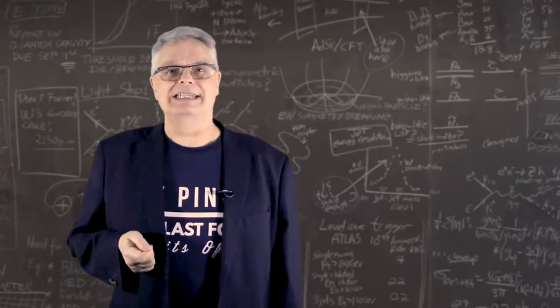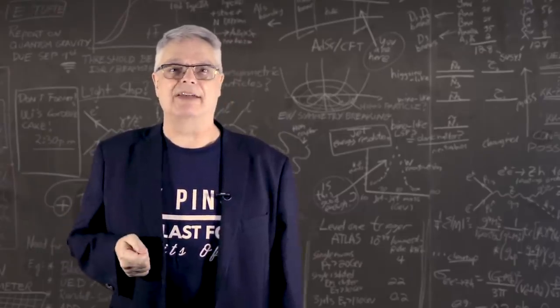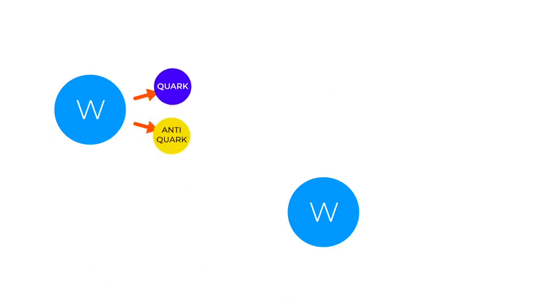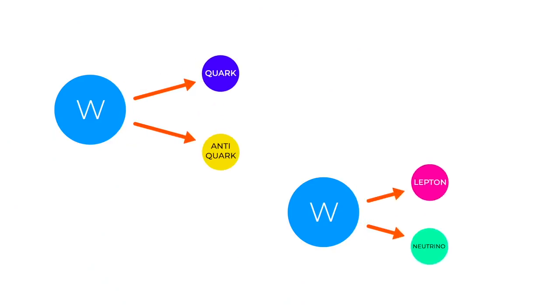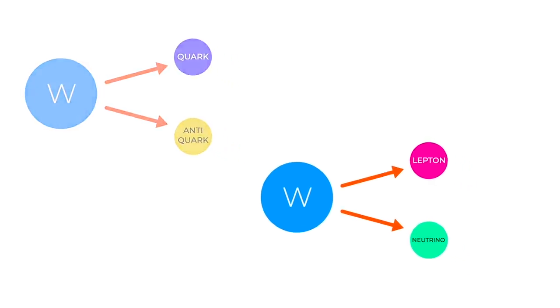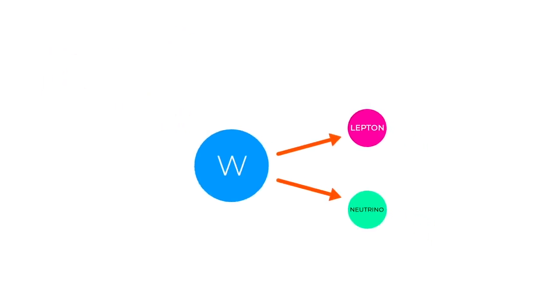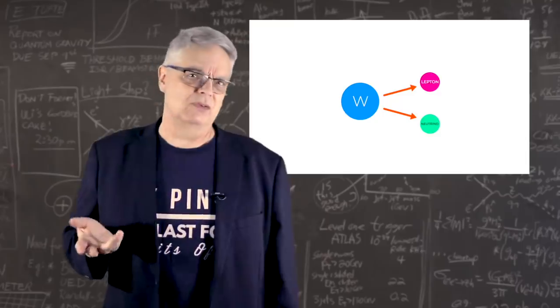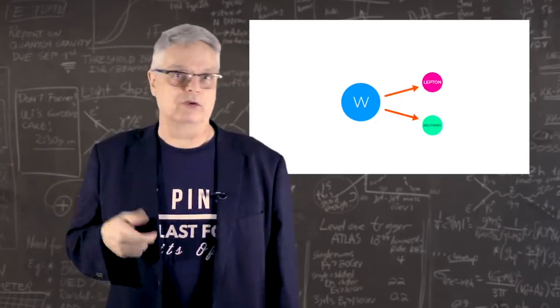W bosons can decay into two distinct paths. They can decay into a quark and antimatter quark or they can decay into a lepton, like an electron or muon, and a neutrino. On the one hand, you can detect quarks pretty easily in your detector. But it's hard to precisely measure their energy and momentum, so this type of decay isn't used for precise measurements.